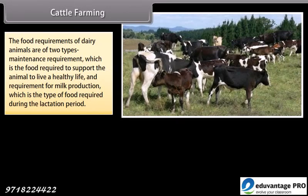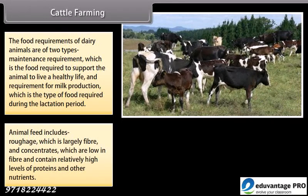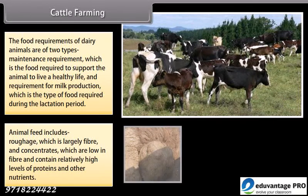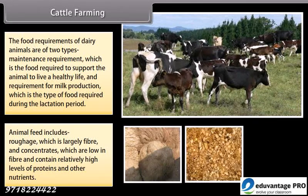The food requirements of dairy animals are of two types: maintenance requirement, which is the food required to support the animal to live a healthy life; and requirement for milk production, which is the type of food required during the lactation period. Animal feed includes roughage, which is largely fiber, and concentrates, which are low in fiber and contain relatively high levels of proteins and other nutrients.